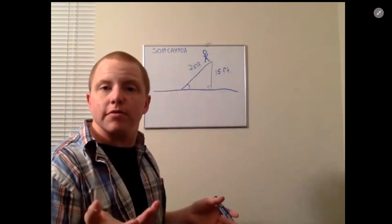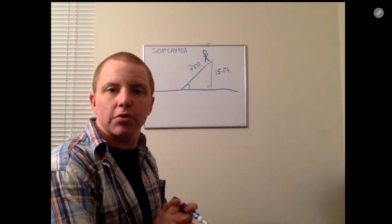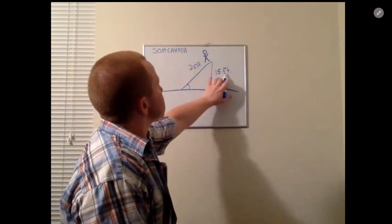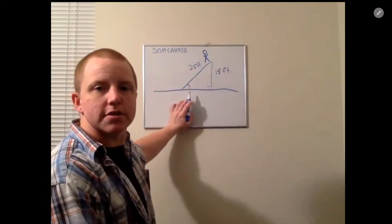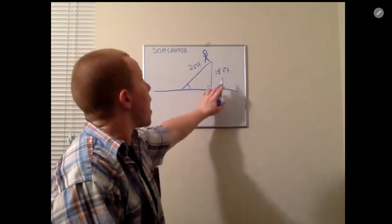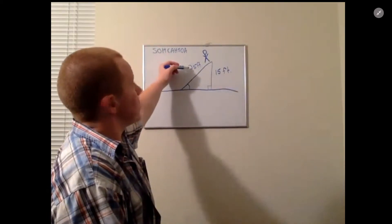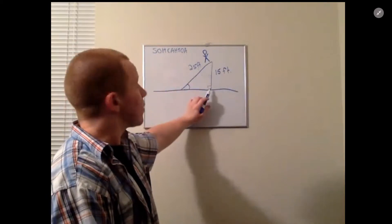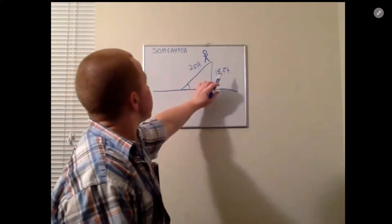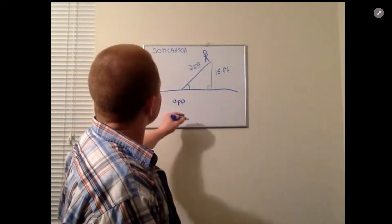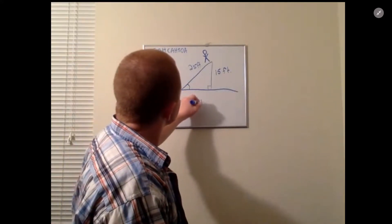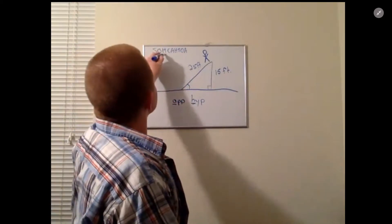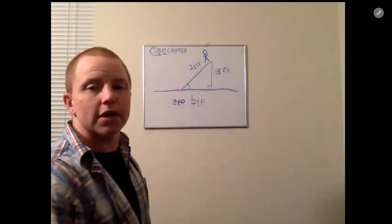We want to figure out what we have so we know what we can use. We have this angle. This side is going to be opposite that angle because it doesn't touch that angle. So we have opposite, and we also have the hypotenuse. The hypotenuse is always directly opposite the right angle. So we have opposite and hypotenuse, the H and the O, which gives us sine.